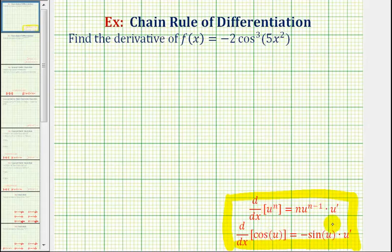Notice how the derivatives are now a product where the first factor is the derivative of the outer function, and the second factor, u prime, is the derivative of the inner function.